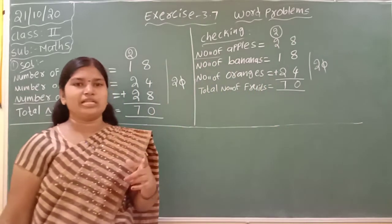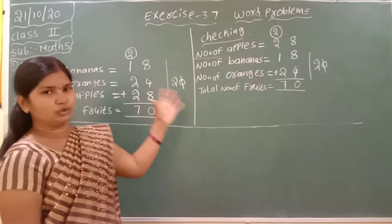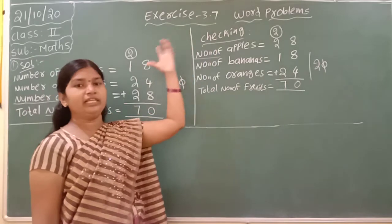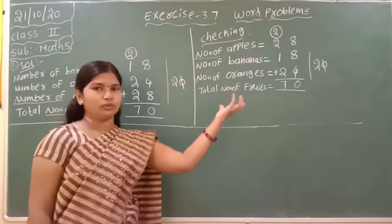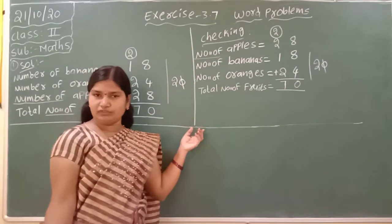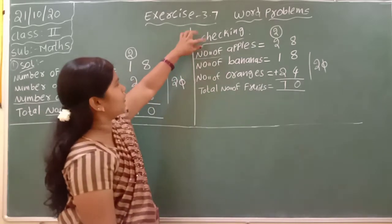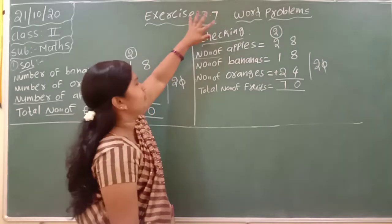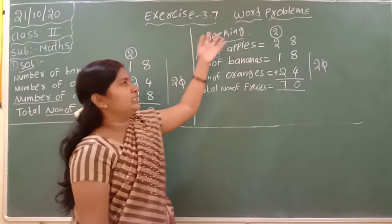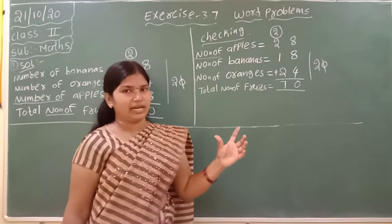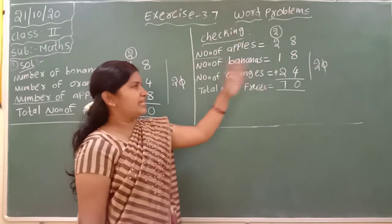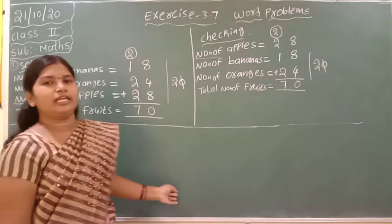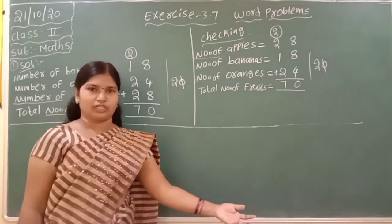In your notebooks also, you must write down the question first, write down the chapter name, the Exercise 3.7 heading, then the question. I am not writing the question on the board — you have to see it in your textbook and write down the question on the left. Leave one line, then write down the answer. After the answer, you must write the checking answer. After checking, go to the second question.